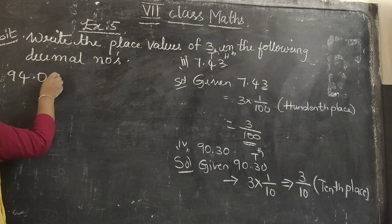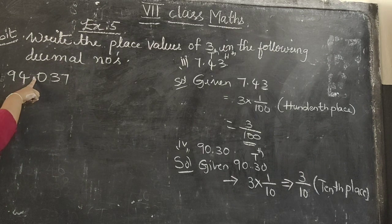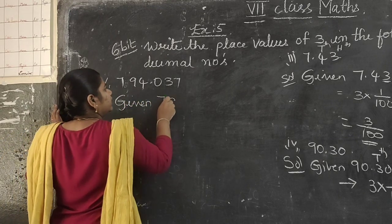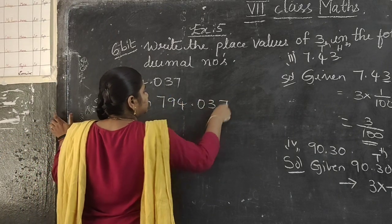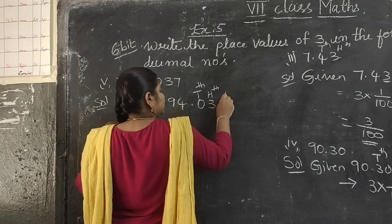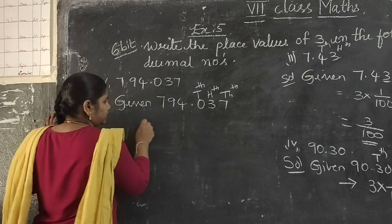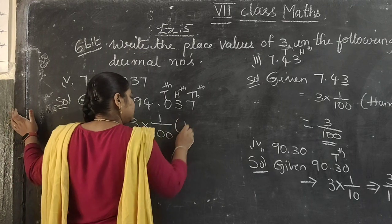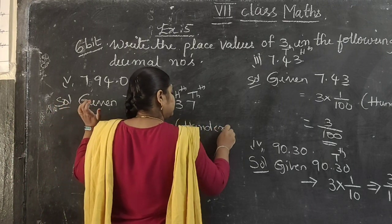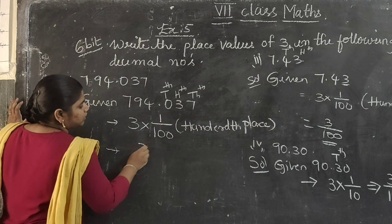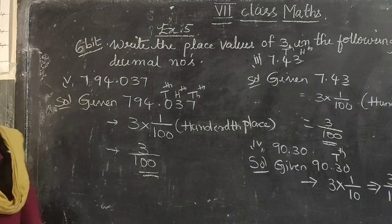794.037. So this 3 is in — after the point, the place value starts from 10th, 100th, 1000th. So 3 is in 100th place. Given 794.037, this 3 is in 100th place. This is 10th place, this is 1000th place. So we can write 3 into 1 by 100, which is 3 by 100. So with this our 6th place is completed.